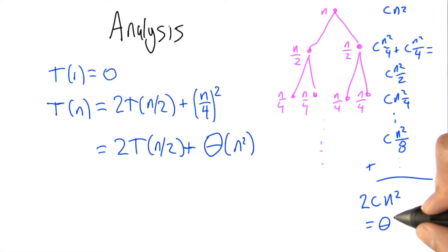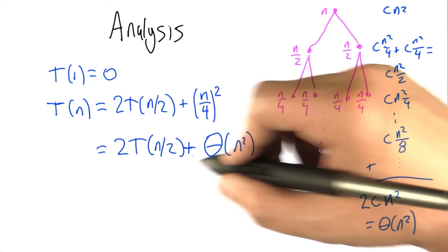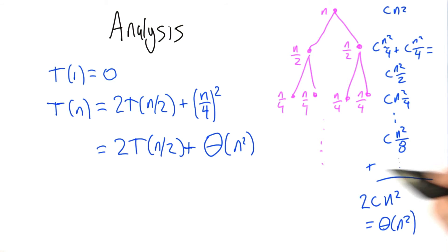So when all is said and done, we still have big theta of n squared edges total. So this recurrence relation solves to n squared, which is interesting, right?